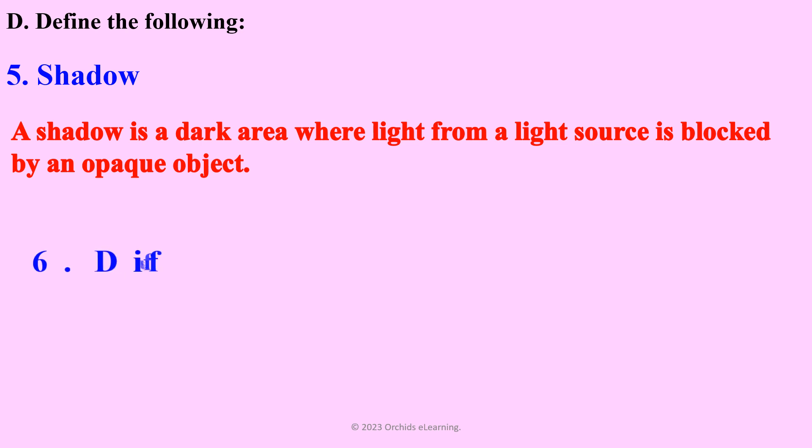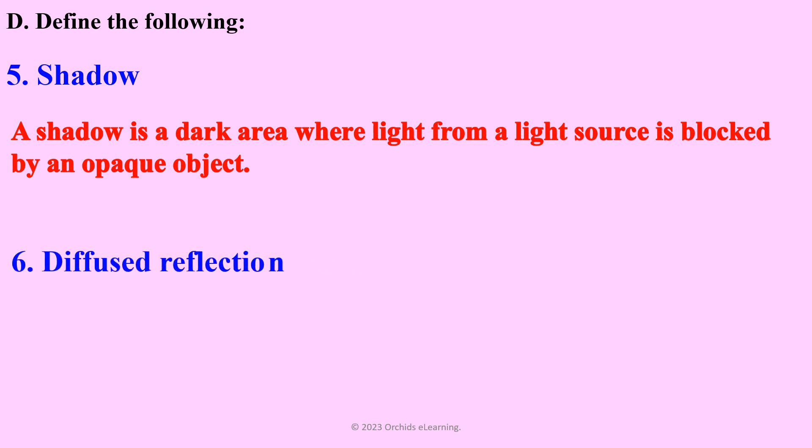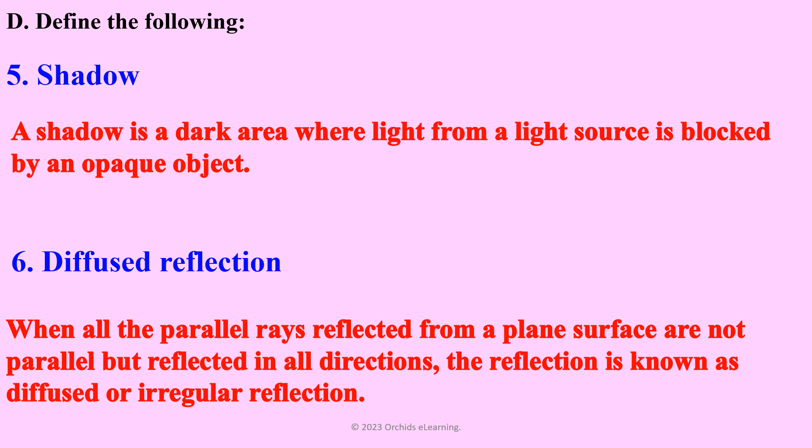Diffused reflection: when all the parallel rays reflected from a plain surface are not parallel but reflected in all directions, the reflection is known as diffused or irregular reflection.